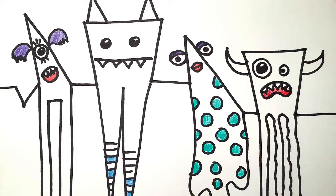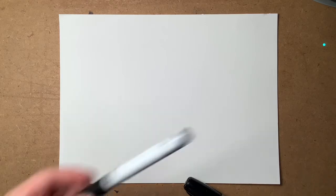We're going to start with a piece of white paper, a sharpie or some other black marker, you can use a Crayola, some colored markers and or some colored pencils.